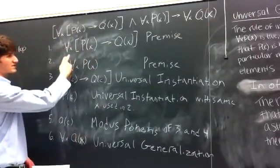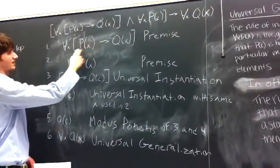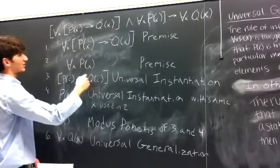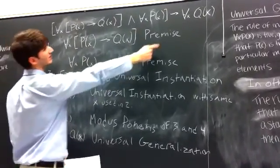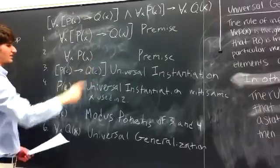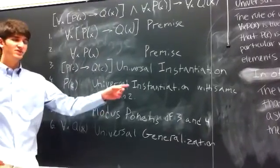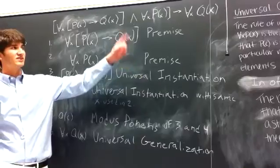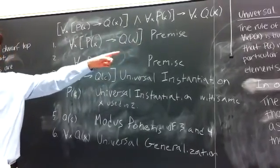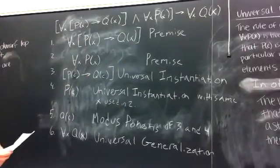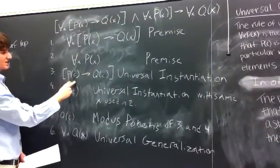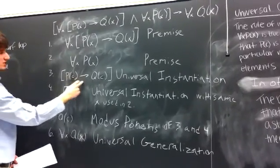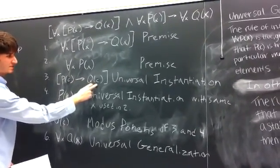We have the premise, for all x, p of x implies q of x. We have the premise, for all x, p of x. Now using the principle of universal instantiation, which is necessary to use universal generalization, we can show that p of x — which is an arbitrary element c — implies q of x, arbitrary element c.